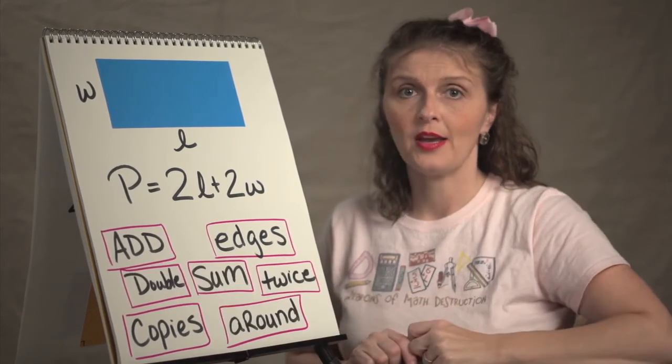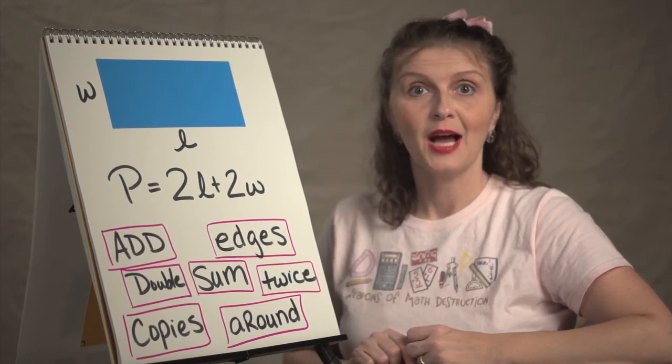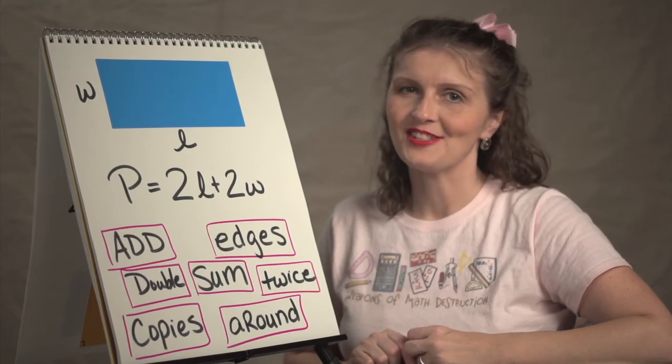So those are some various ways you can describe the perimeter of a rectangle given the length and width. I'm Bon Crowder with Math4.com, reminding you that math is not a four-letter word.